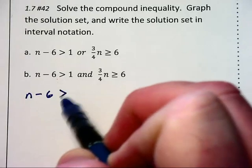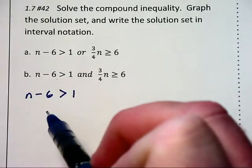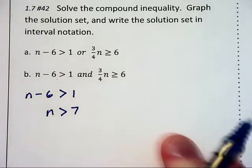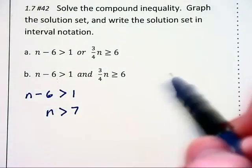If we look at the first inequality, n minus 6 is greater than 1, and we add 6 to both sides, we get n is greater than 7.